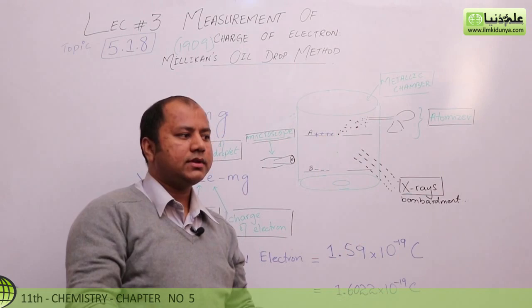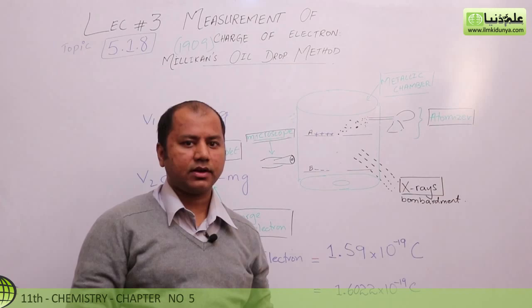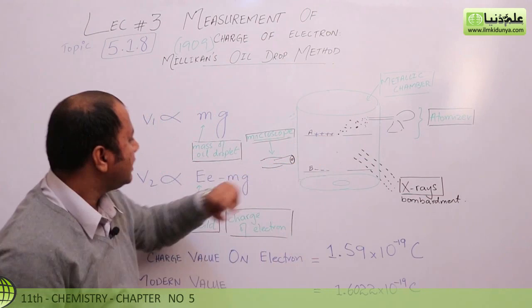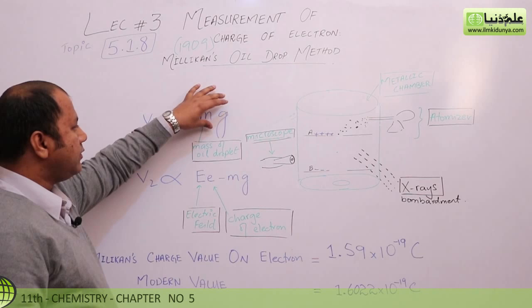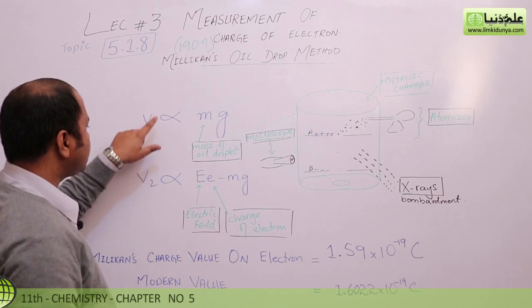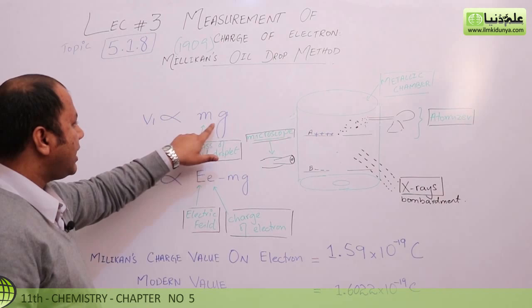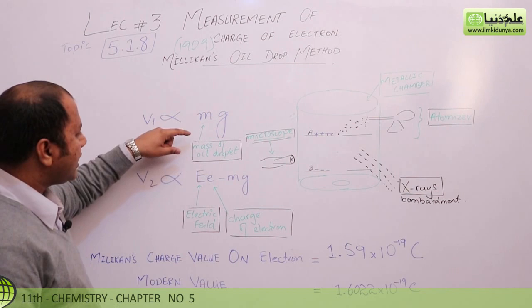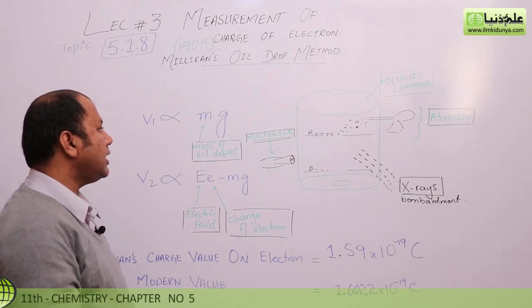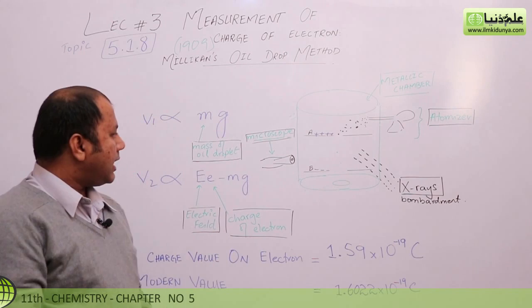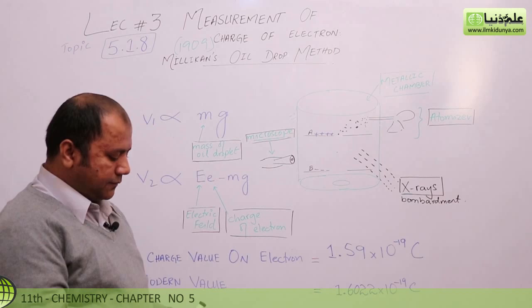When we spray the particles, they will definitely move with gravitational acceleration. You can see that the velocity of these particles is directly proportional to gravity. The particles which are moving carry some mass — so M stands for mass of the oil droplet and G stands for gravity.